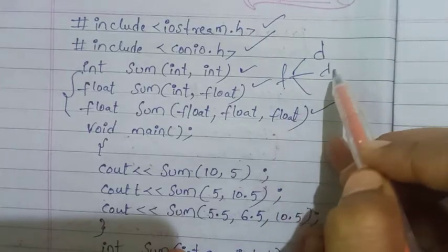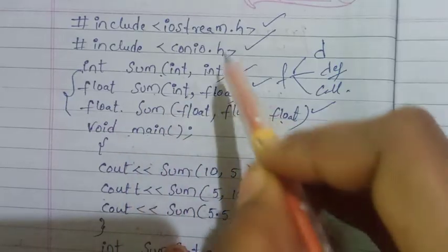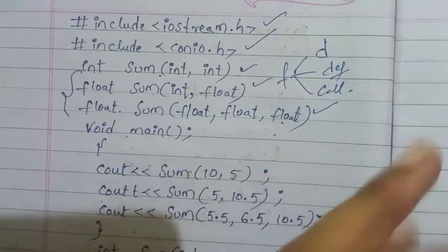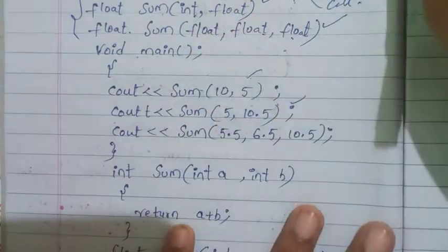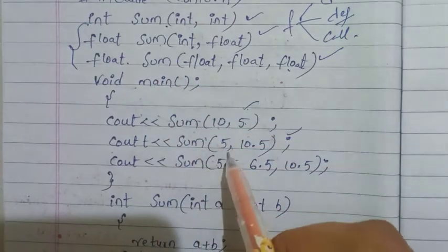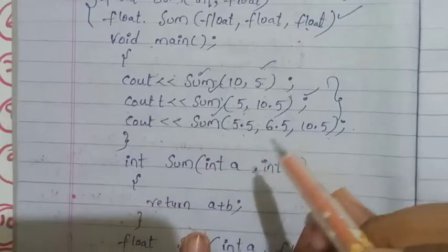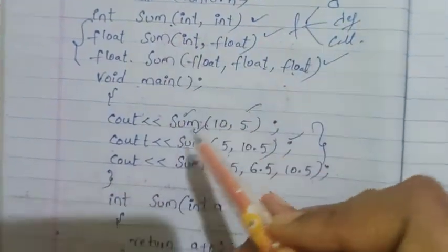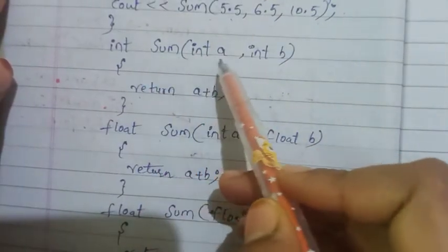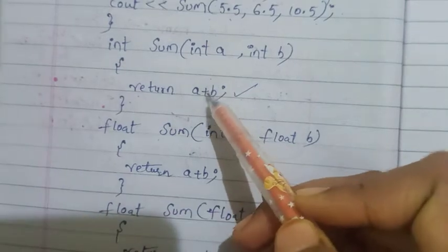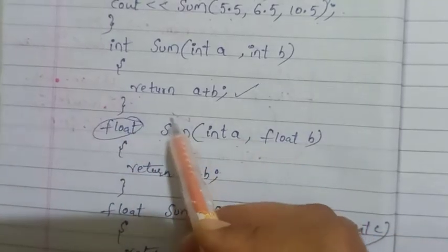Let's look at an example program. We declare three functions: one with int and int, one with int and float, and one with three float arguments. Inside the void main function, we call these functions. The definitions are: sum of int a, int b returns a plus b; float sum of int a, float b returns a plus b as float; and float sum of three float values returns a plus b plus c.